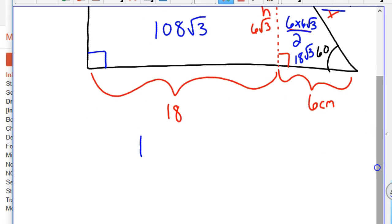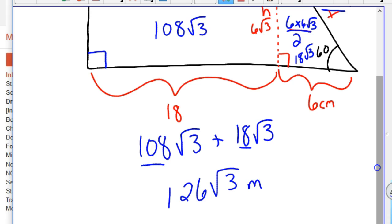And then we can add those together. So 108 root 3 plus 18 root 3 is 100. You can add the 108 and the 18 since the radicals are the same. And 108 plus 18, that's a 6. Carry the 1, that's 2. So that's 126 root 3. And that would be meters squared.